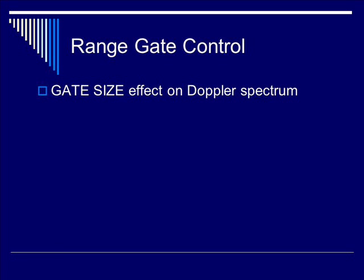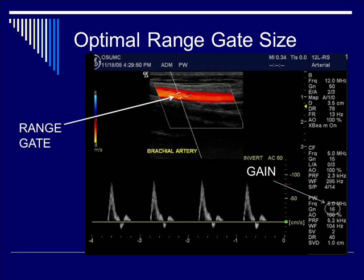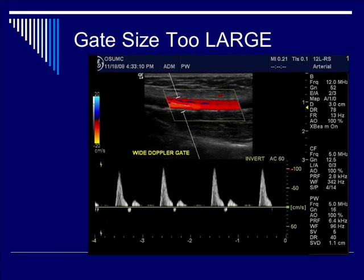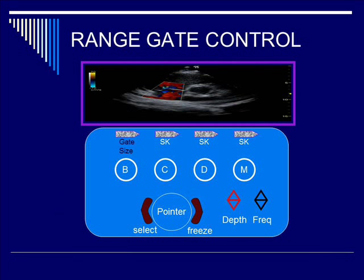Let's look at some examples of the gate size and its effect on the Doppler spectrum. For the optimal range gate size, as you see in the brachial artery example, the range gate is located squarely within the vessel. As a result, for a gain of around 16, which is optimal, you get a 1D spectra with a good spectral window — the black area underneath the peak of the curve. Now, what happens when the gate size is too large? In this case, the range gate is larger than the vessel of interest. As you expect, covering the soft tissue around the vessel results in a lot of fill-in of your spectra — in other words, spectral broadening. One cause of spectral broadening is too large of a gate size.